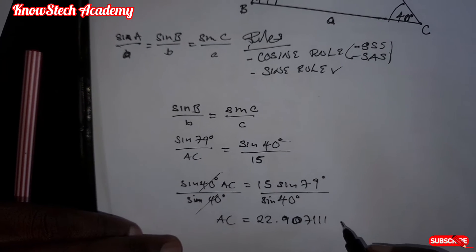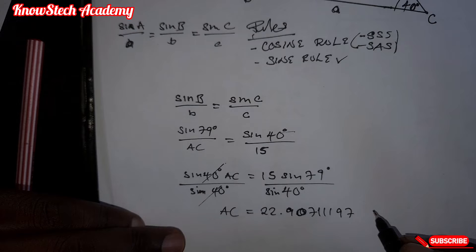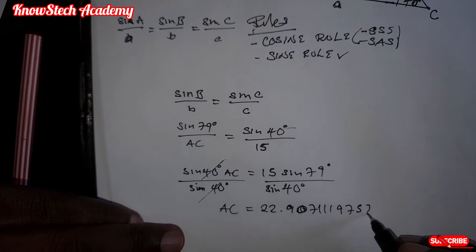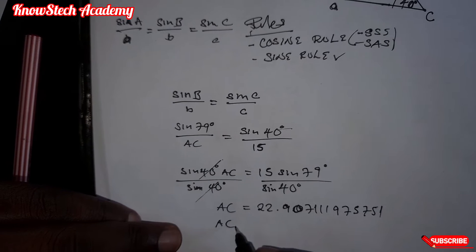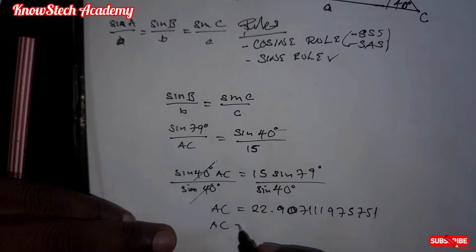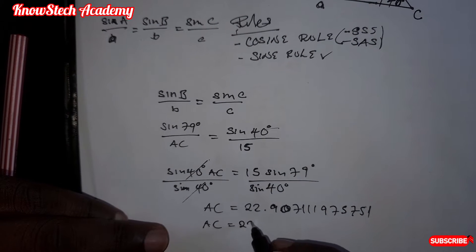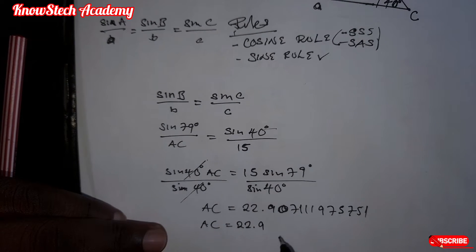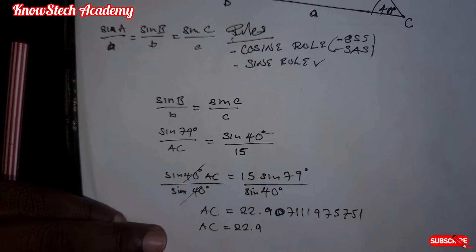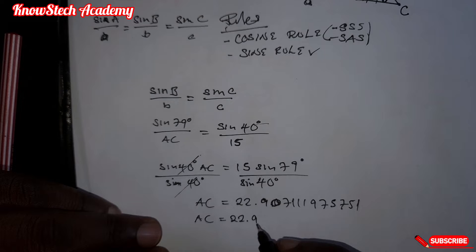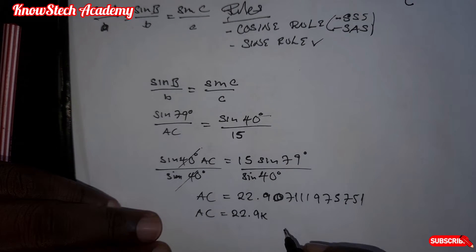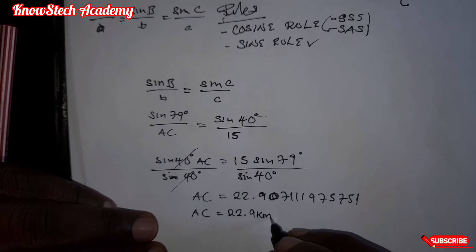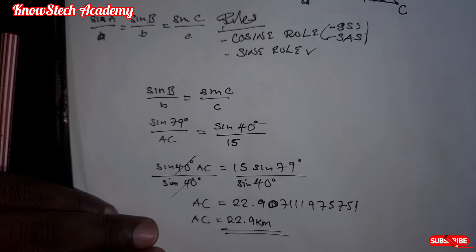We are going to find 22.907111975751. Now when you round this figure off to three significant figures, it will be 22.9. Because this one is less than five, so you will not add to the previous number. 22.9 kilometers.